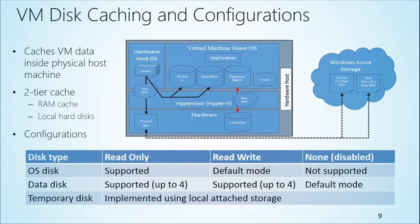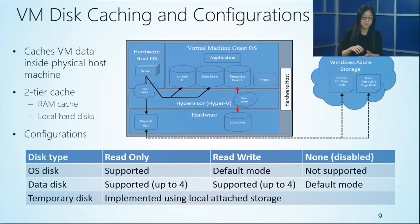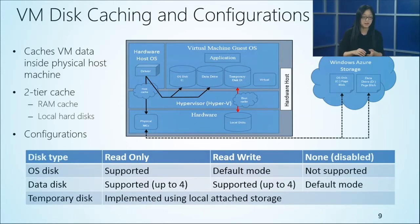When talking about caching, we need to be careful because there are multiple types. Specifically we're talking about Windows Azure Virtual Machine disk caching, which is a two-tier caching. The purpose is to shortcut data so you don't have to go all the way to the back-end Windows Azure Storage, leveraging local storage instead. The two tiers are RAM cache — which caches your most recently used data — and local hard disks. The local hard disk cache has lower latency but limited IOPS because it's hard disks striped across multiple disks.